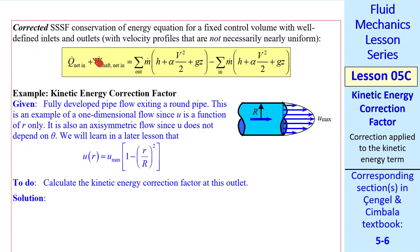Here we call this the corrected steady state, steady flow conservation of energy equation. The caveats are that this is a fixed control volume with well-defined inlets and outlets, but the velocity profiles are not necessarily nearly uniform anymore. And you can see the only difference is that we now have these alphas in here.